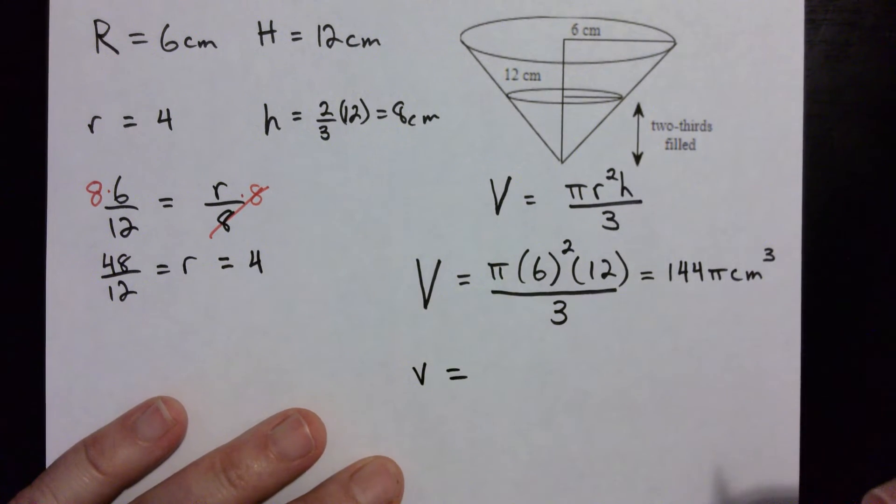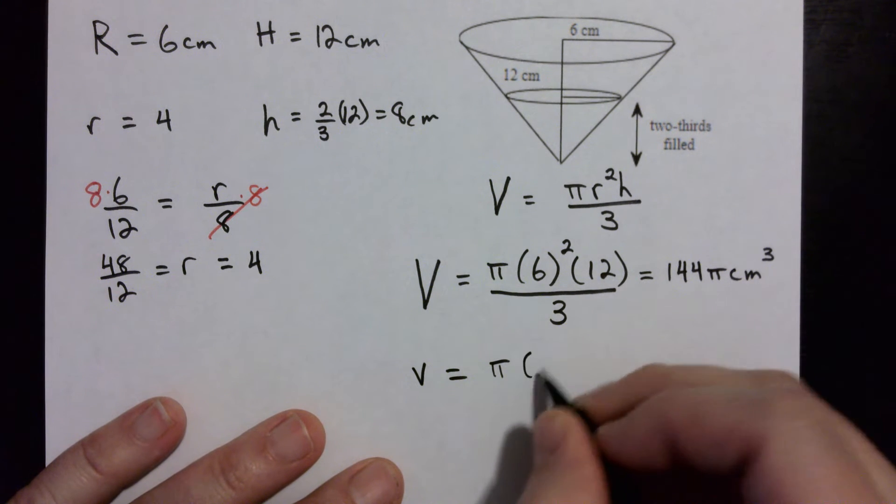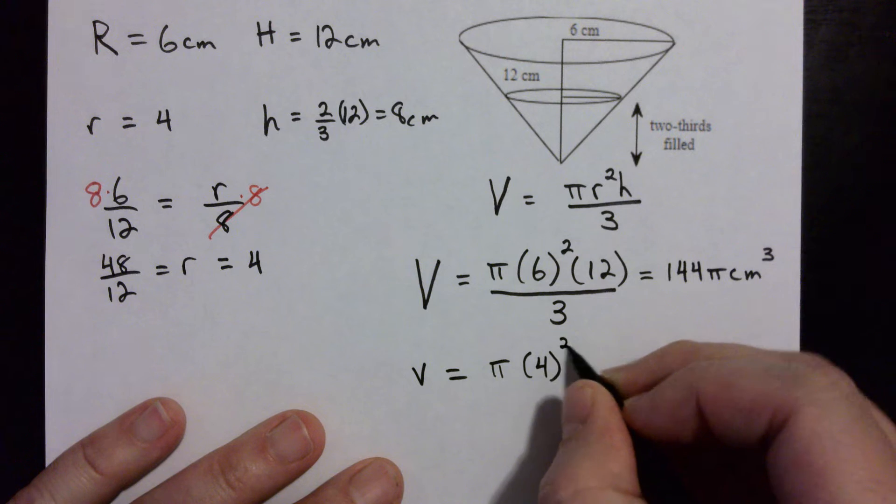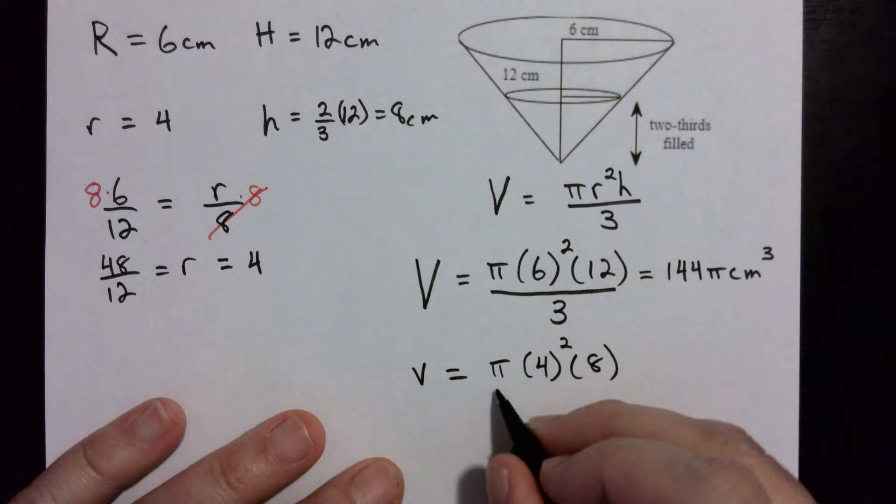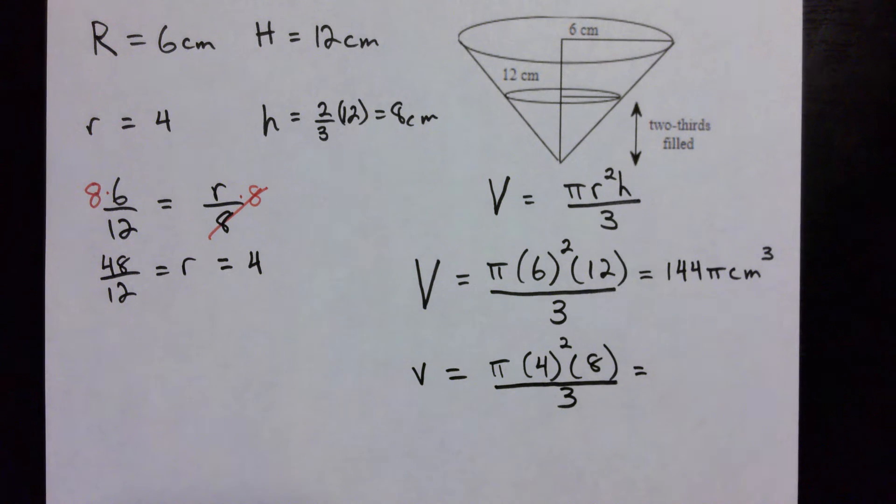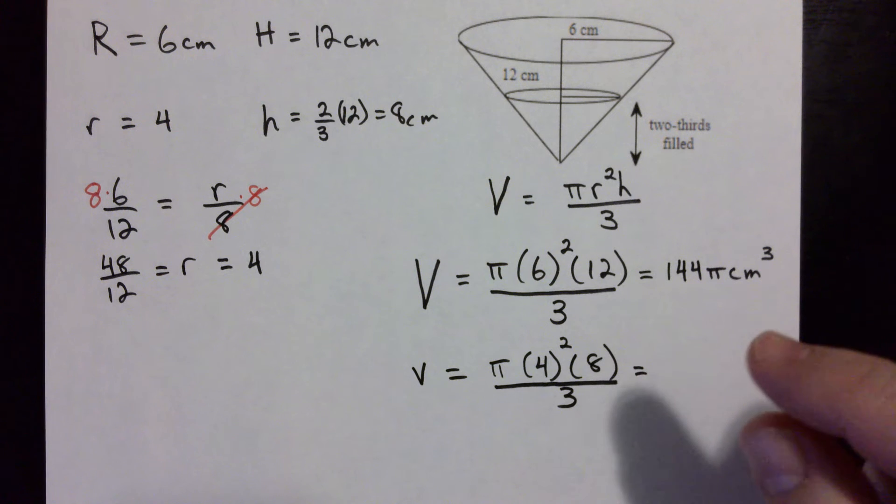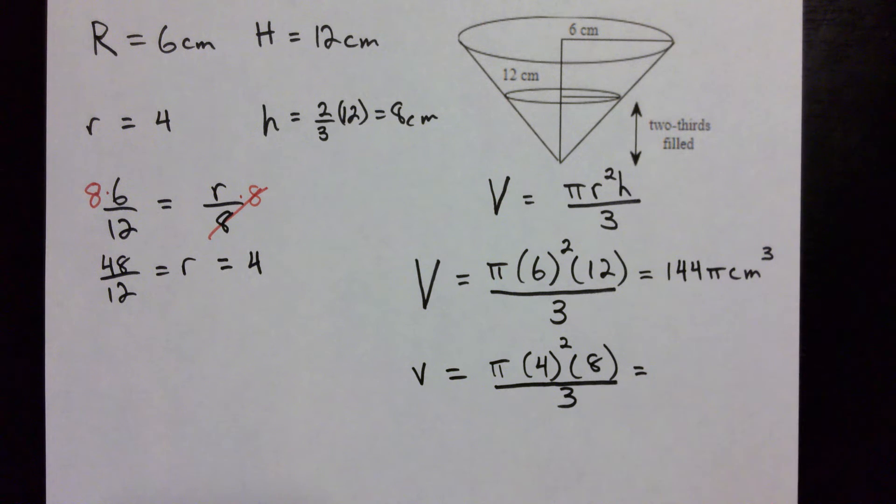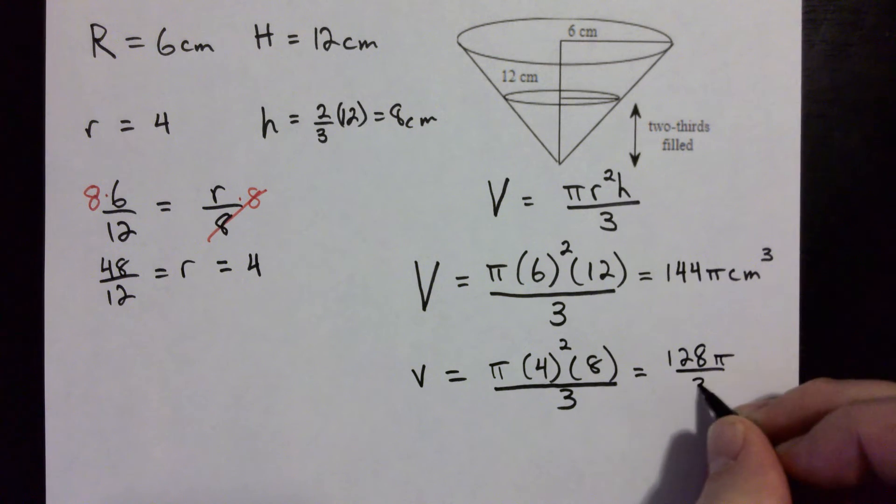Okay, now for the small v, we'll use the smaller numbers. So it is π times our little r which is 4 squared times our little h which is 8, and then divide it by 3. And if you multiply that all out, you square this one, multiply it by 8 and then divide it by 3, you end up getting 128 π over 3.